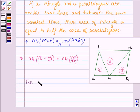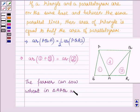the farmer can sow wheat in triangle APQ and pulses in other two triangles.